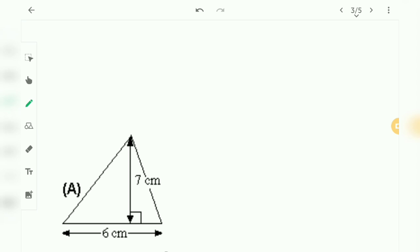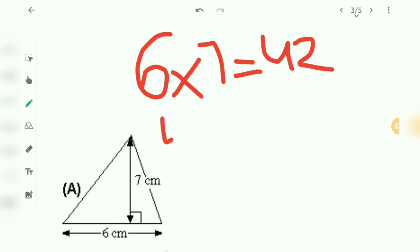So the first thing we need to do is you multiply 6 into 7, and that is 42. 42 divided by 2, that is 21 cm squared.